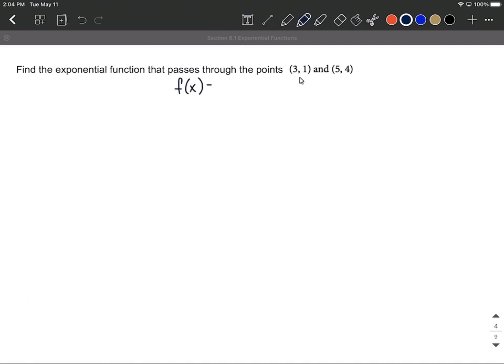First of all, we know it's an exponential function, so that means it has to fit into this format, a times b to the x power. So what I'm going to do is first create two equations here based on these ordered pairs that we're given.